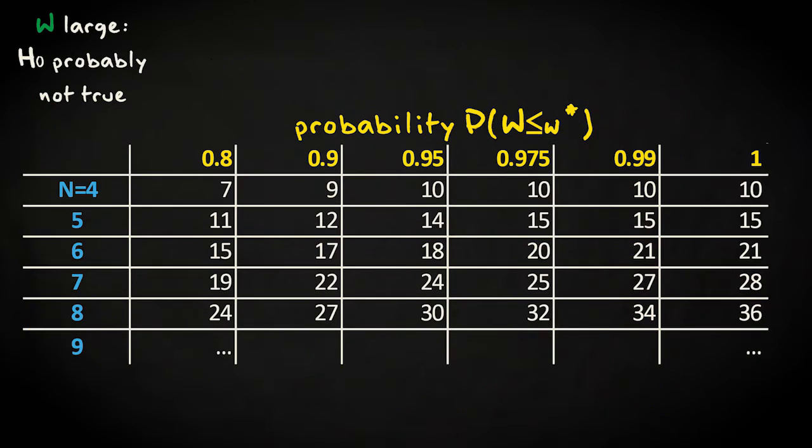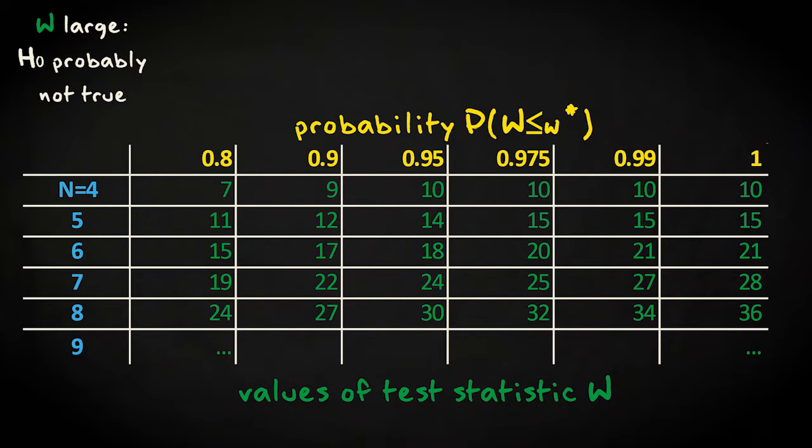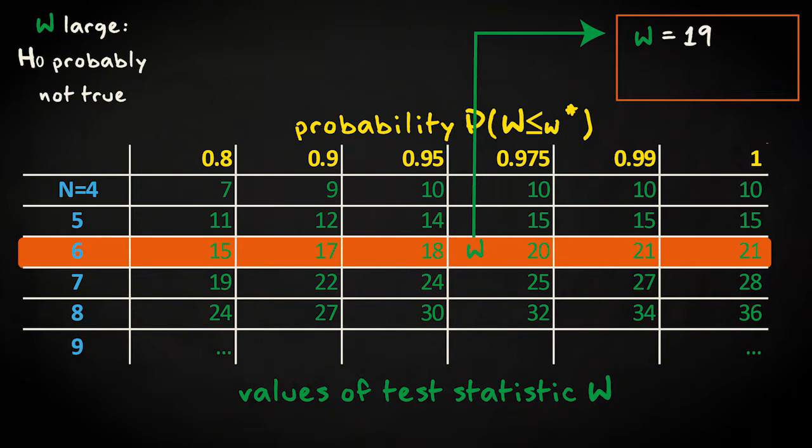By using a cumulative probability table or software, you can find the probability of encountering a given value W or higher with n non-zero observations. Because we are in this case interested in a two-sided test, this probability should be doubled.